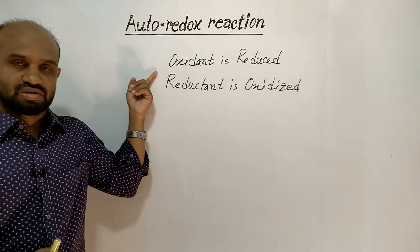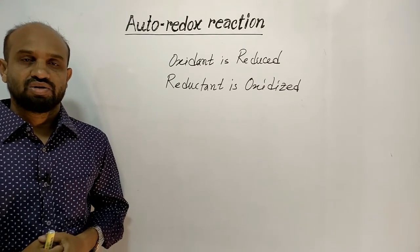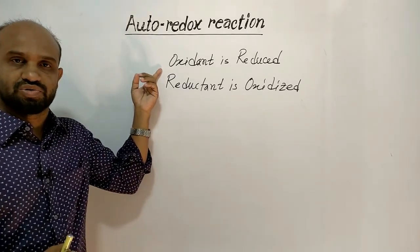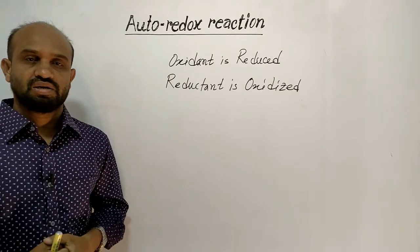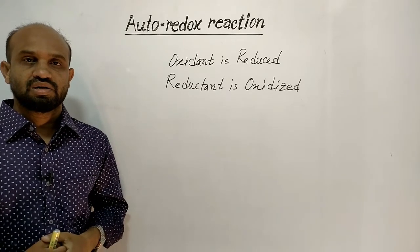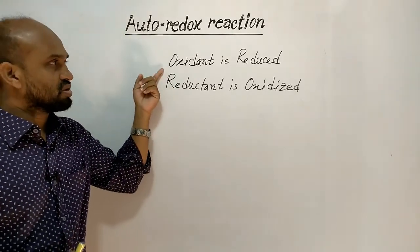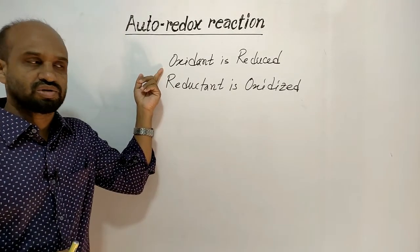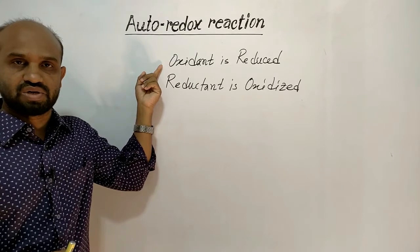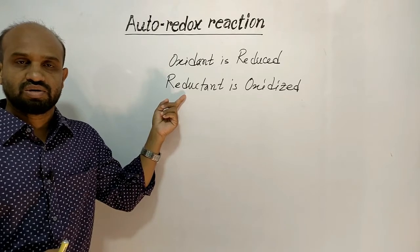Electron acceptors are oxidants, and oxidants after accepting electrons are reduced. Electron donors are reductants, and reductants after donating electrons are oxidized. That means oxidant is reduced and reductant is oxidized. Oxidant after accepting electrons is reduced and reductant after donating electrons is oxidized.